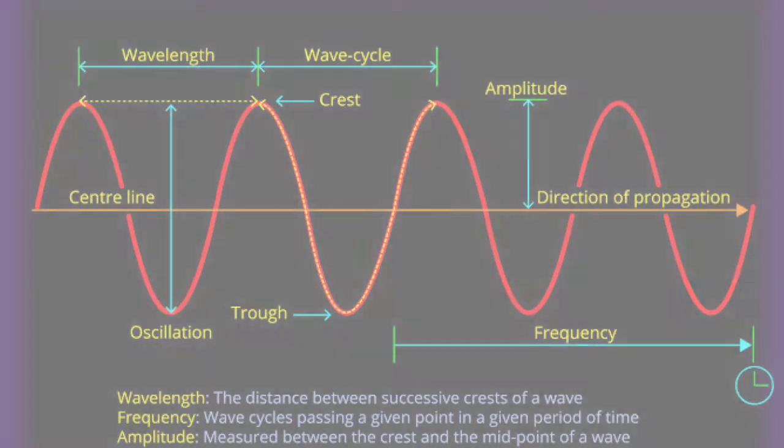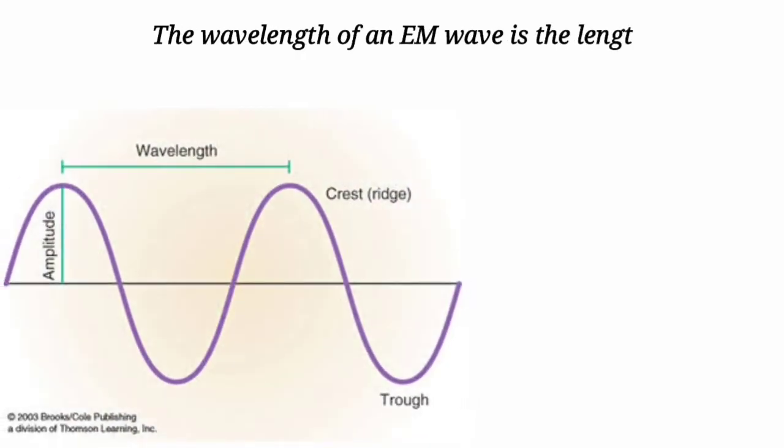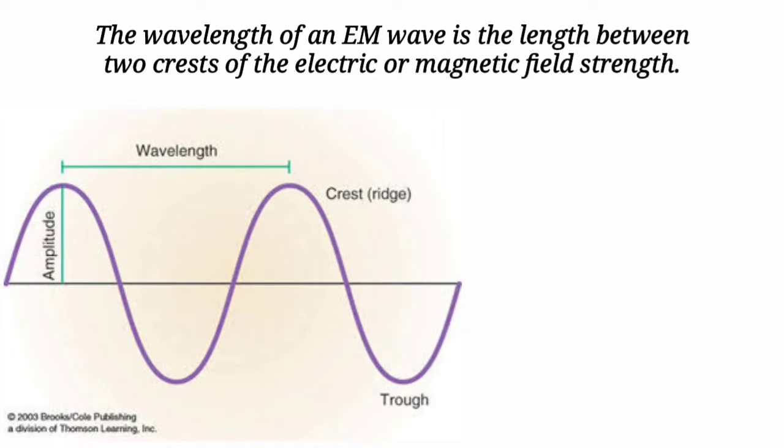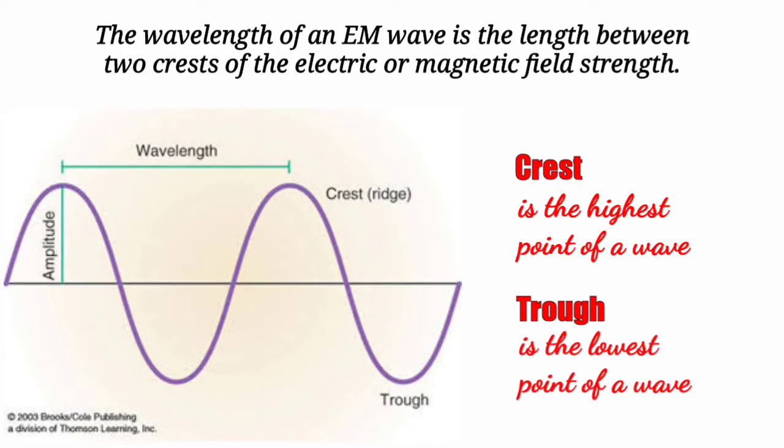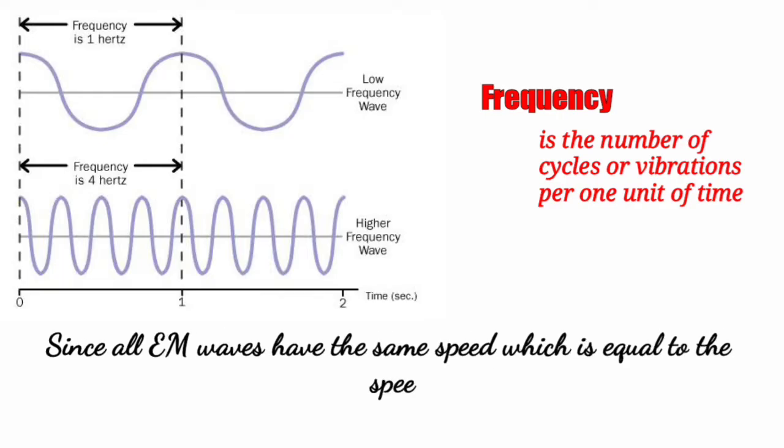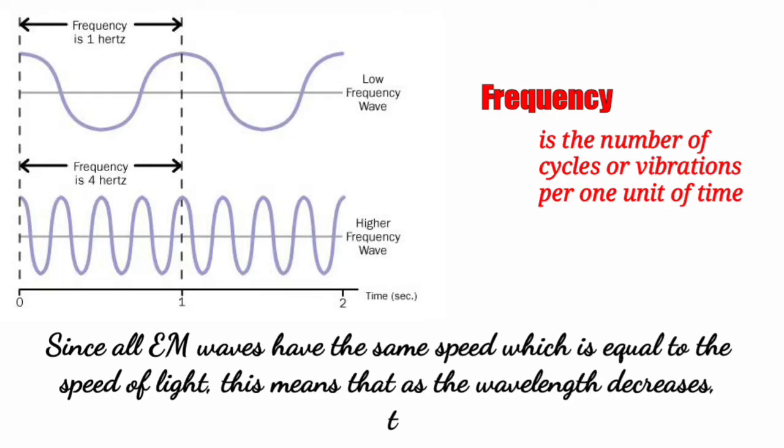If you can recall, the wavelength of an EM wave is the length between two crests of the electric or magnetic field strength. Crest refers to the highest point of a wave, while trough is the lowest point of a wave. The frequency of a wave refers to the number of cycles or vibrations per one unit of time.